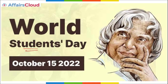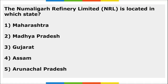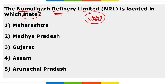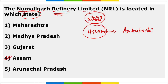World Students Day is observed on 15th October in memory of Dr. APJ Abdul Kalam. Numaligarh Refinery Limited (NRL), located in Assam, is expected to complete the construction of the India-Bangladesh Friendship Pipeline by end of 2022. The Ambubachi Festival is also observed in Assam.